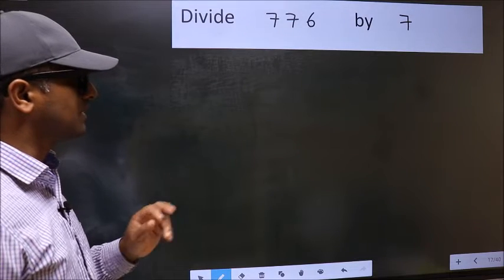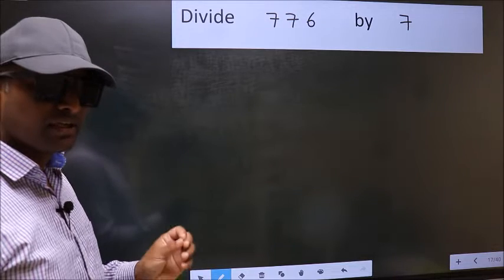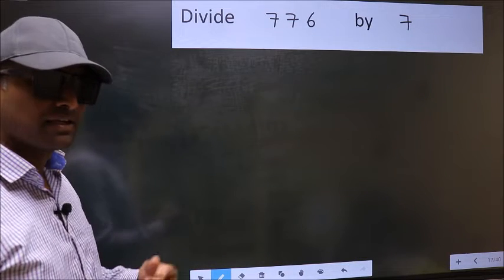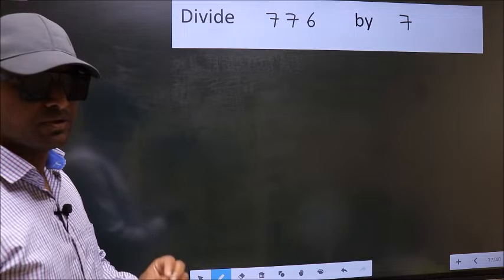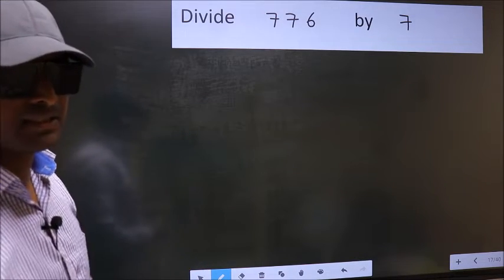Divide 776 by 7. While doing this division, many make this mistake. What is the mistake that they do? I will let you know. But before that, we should frame it in this way.